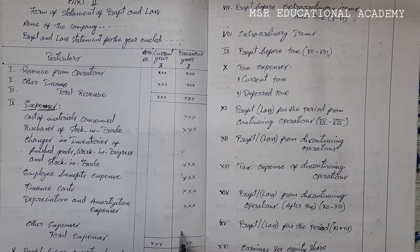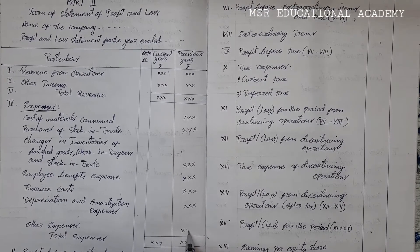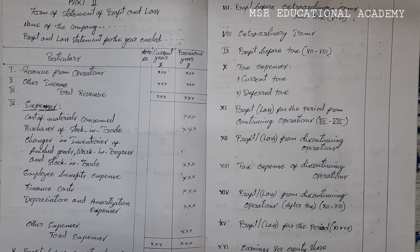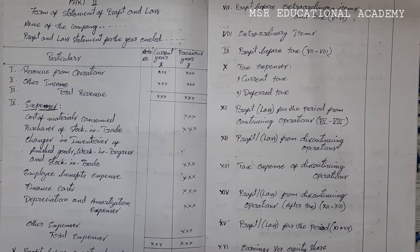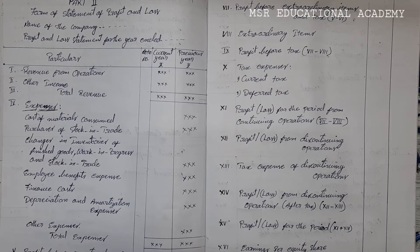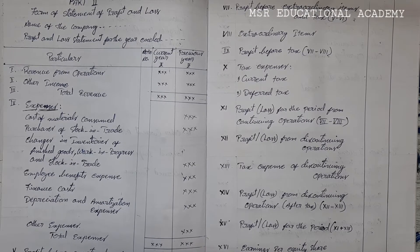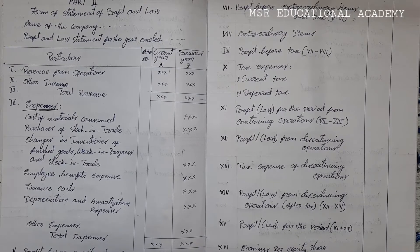Next is other expenses — other than the above expenses, all those expenses come to other expenses. For example, advertisement expenses, any commission paid — that type of expenses comes to other expenses.